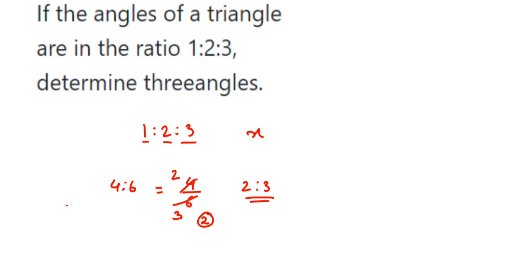Like that, for 1:2:3, there could be a common factor - it could be 1, it could be 2, it could be any number. So that is why we're going to take a variable x here, and the first, second, and third angle will be 1x, 2x, and 3x. So let the three angles be 1x, 2x, and 3x.